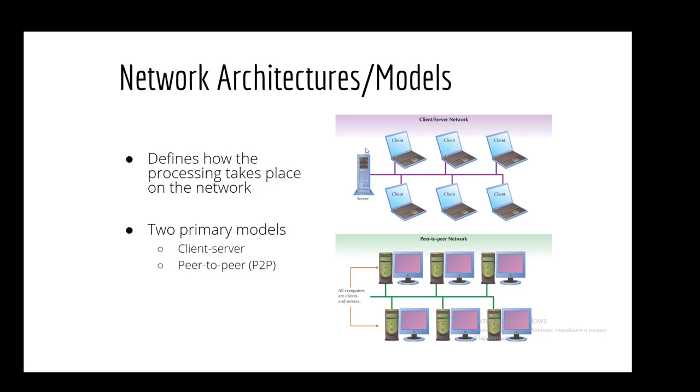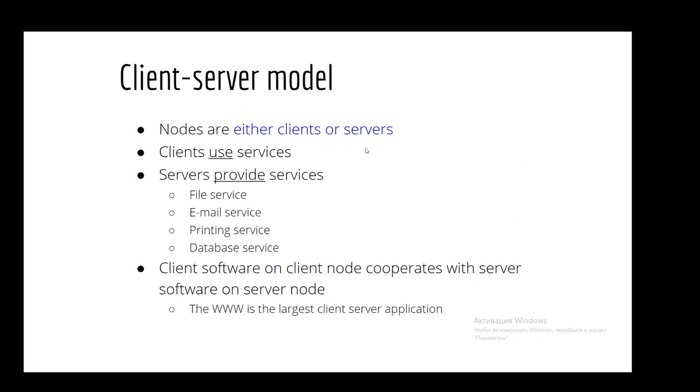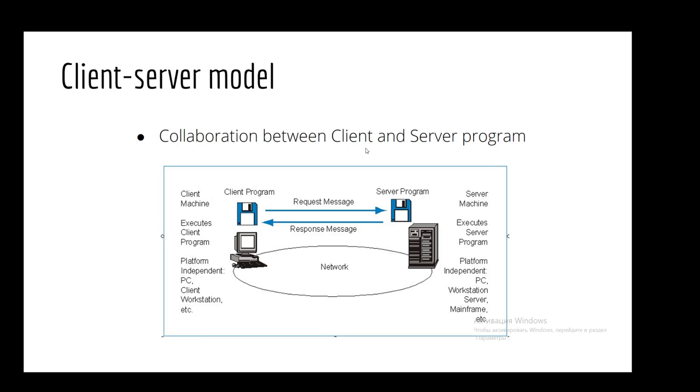Now let's talk about network architectures and its models. Here in the picture you can see client-server network and peer-to-peer network. So there it defines how the processing takes place on the network. There are two primary models: client-server and peer-to-peer. Client-server's functions are listed here. They are nodes that are either clients or servers. Clients use services, servers provide services. The main idea of collaboration between client and server program are shown in this picture.